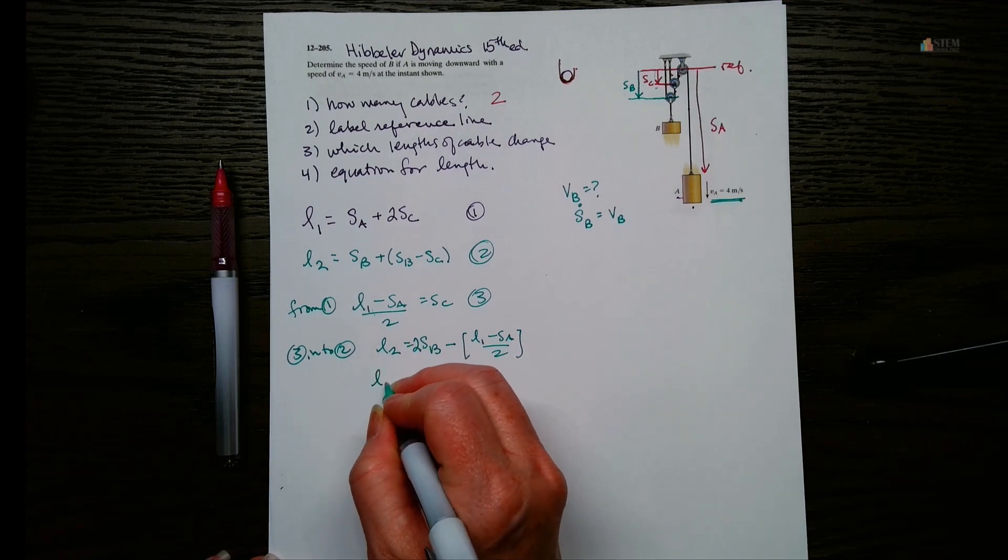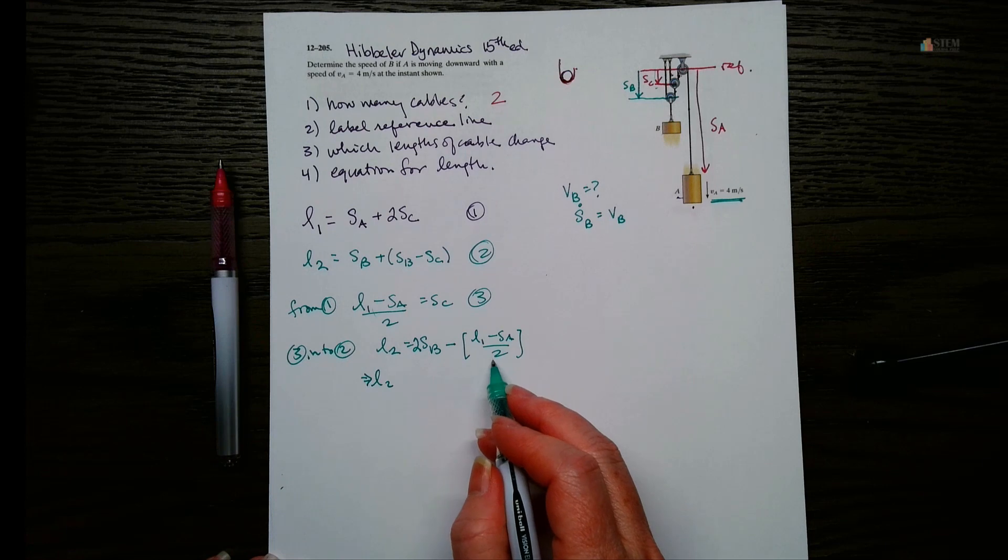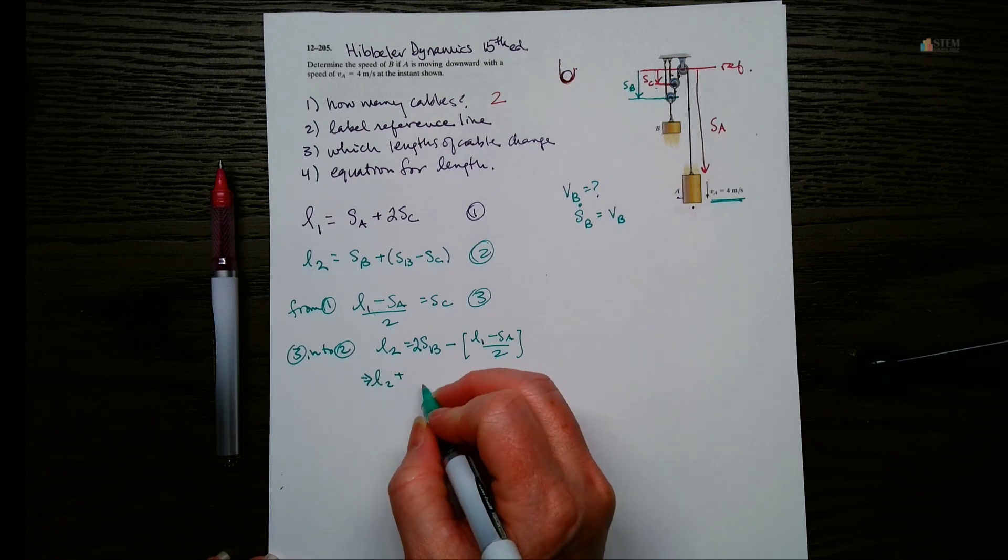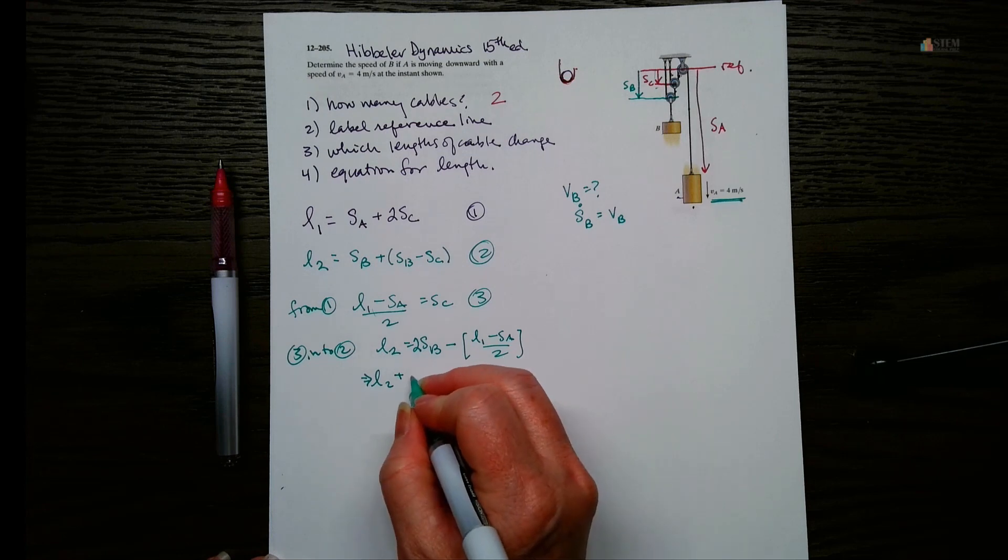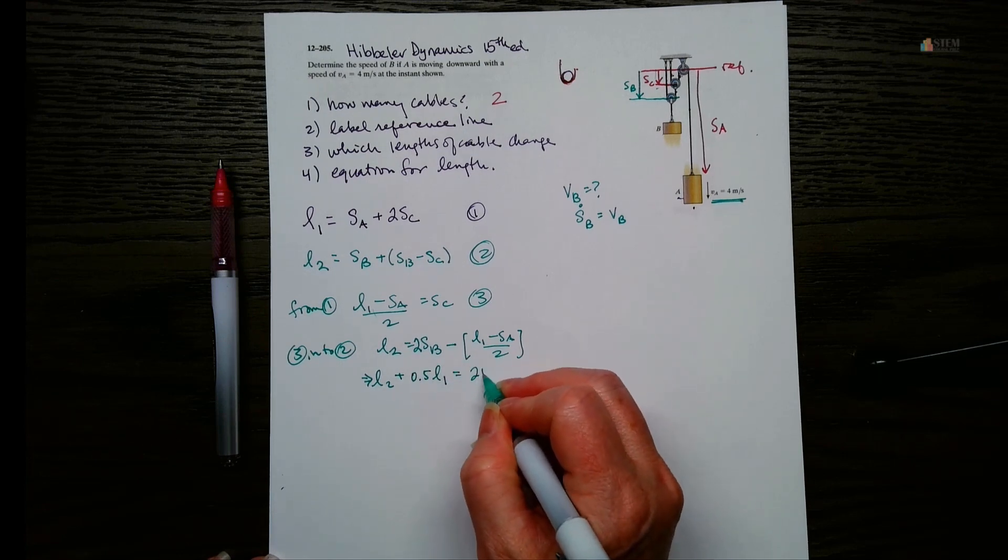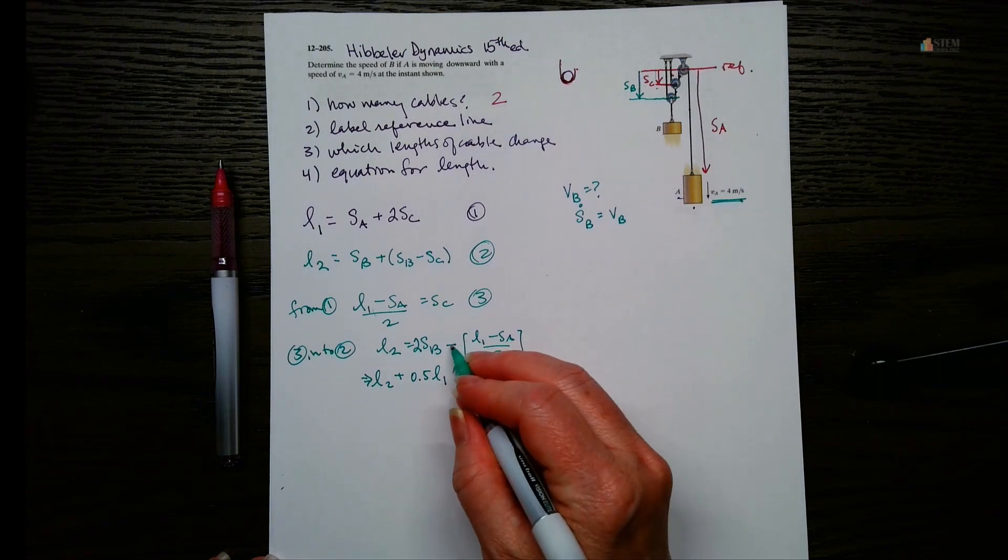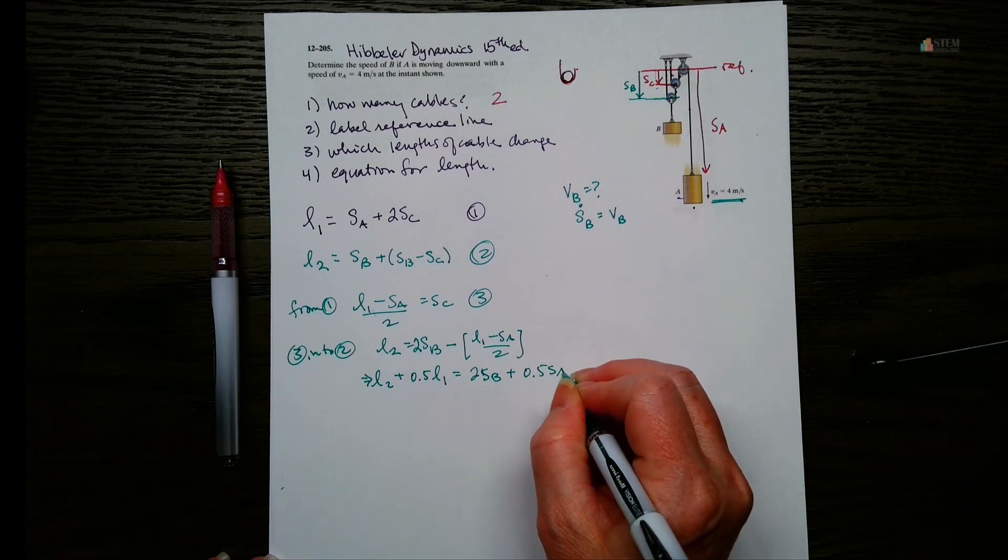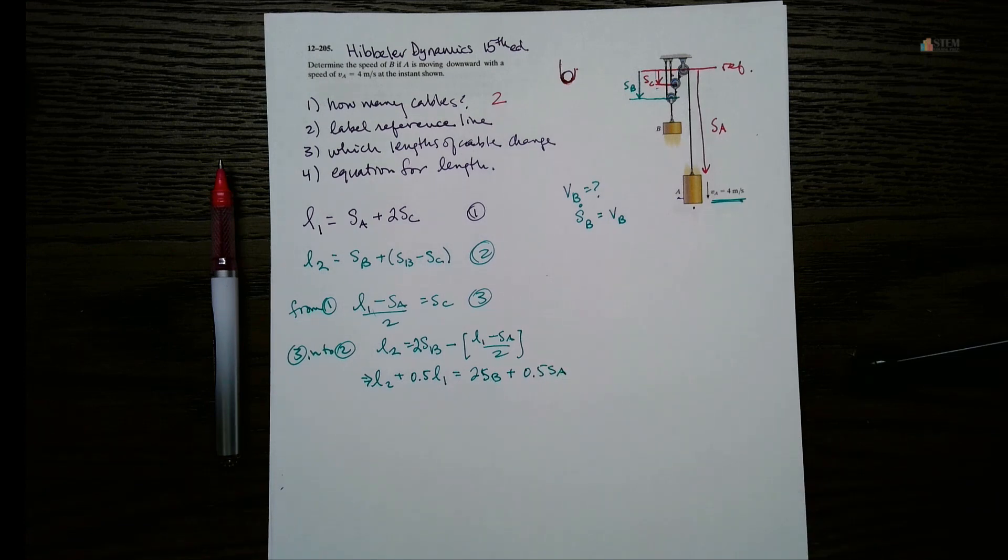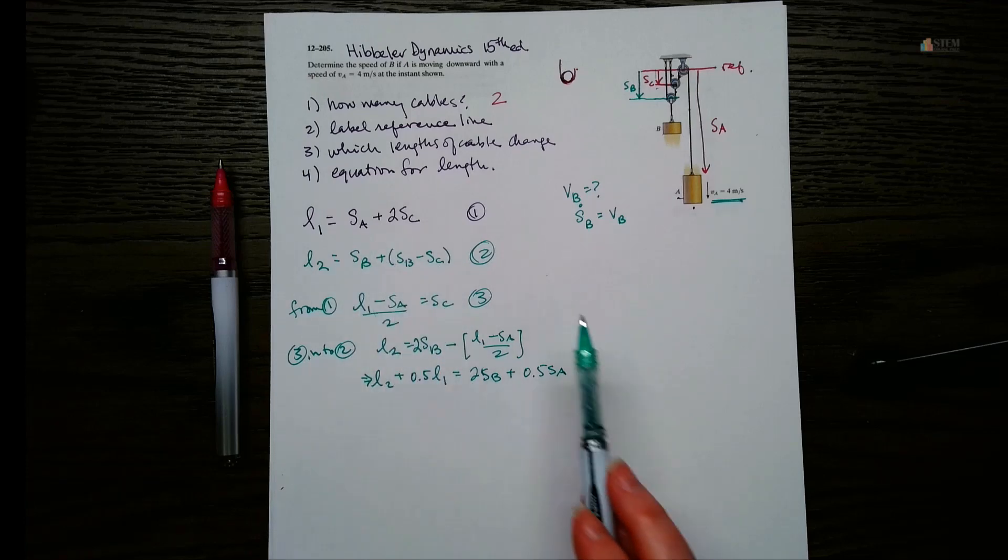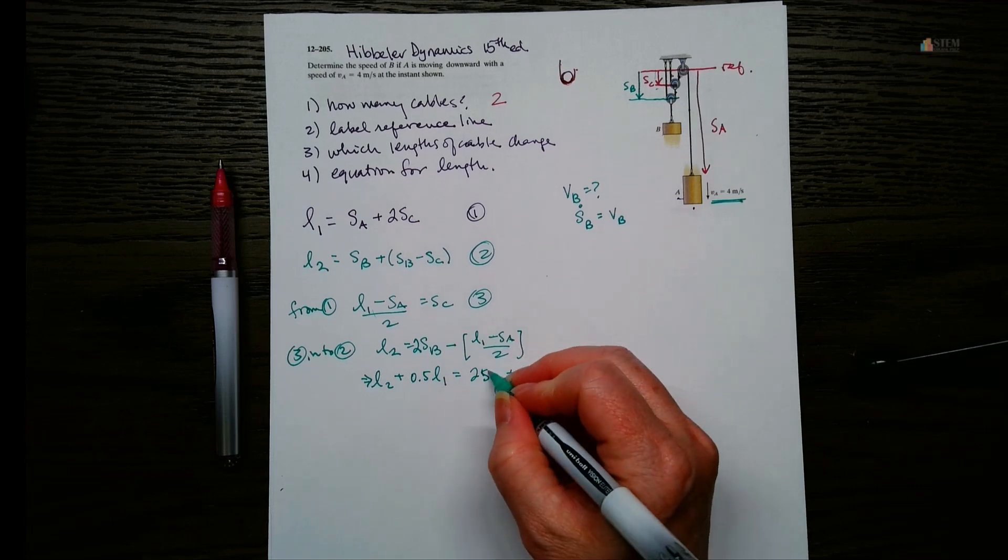We've got L2 over here. And then let's bring this L1 over 2 over. So it's going to become positive. So it plus, and then it's 1 over 2, right? So that would be 0.5 L1. And then that's going to equal 2SB plus, because it's negative negative here, plus 0.5 SA. And actually it might have been easier to solve this one for SC because you don't have to worry about the fraction. I just didn't think about it when I was doing it.